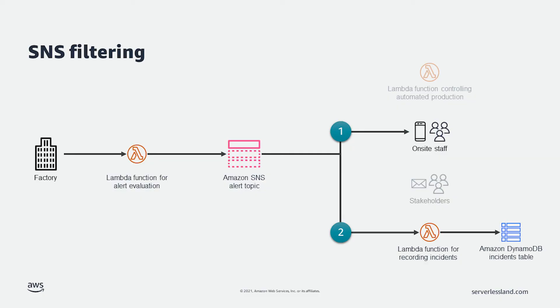SNS offers many features to help move events through your application. One feature is the ability to filter events. Going back to our factory floor example: let's say the system detects some issue, but there's not a need to shut down operations. In this case, a warning is sent to the alert topic, which will still alert the on-site staff and record the incident in the log. However, using filters, I do not invoke the Lambda function to shut down the operations, and the stakeholders will not have an email waiting for them.